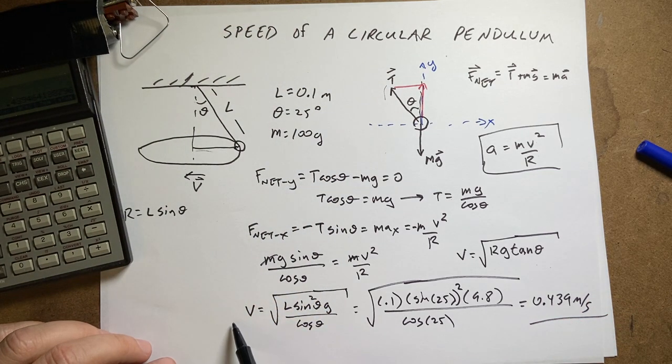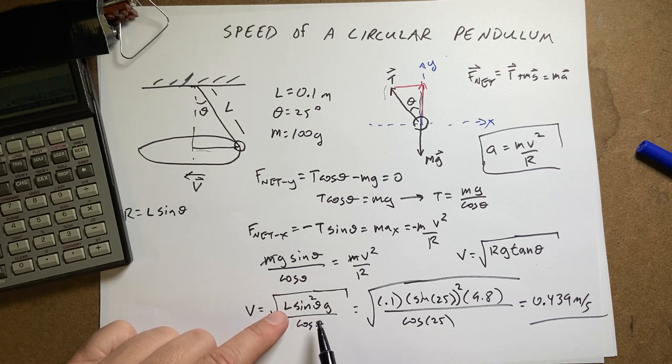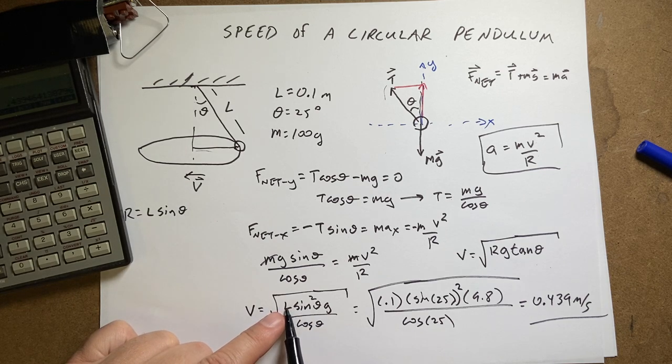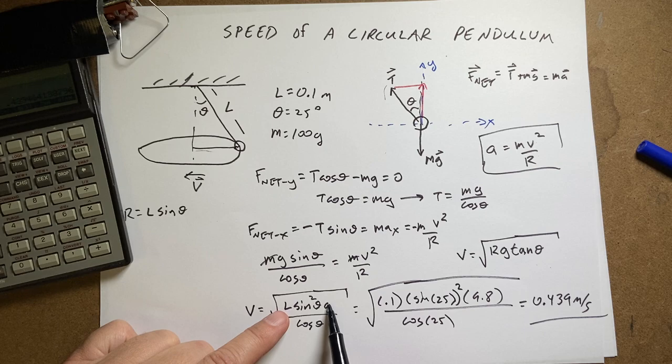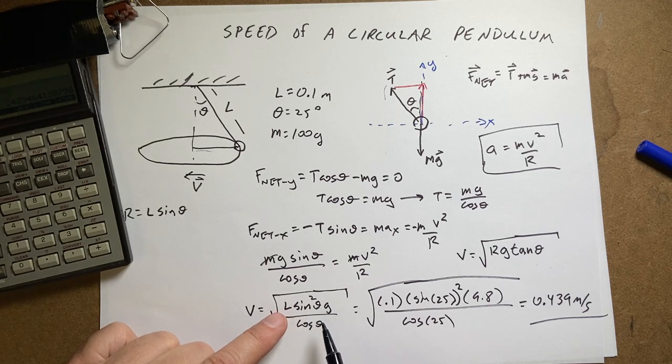And I get 0.439 meters per second. Which I don't really care about the numbers. I don't really care about that. So there you go. Everything has the right units. Let's check real quick. Because this is meters. And this is meters per second squared. So I get meters squared per second squared. I take the square root and I get meters per second. That's good.